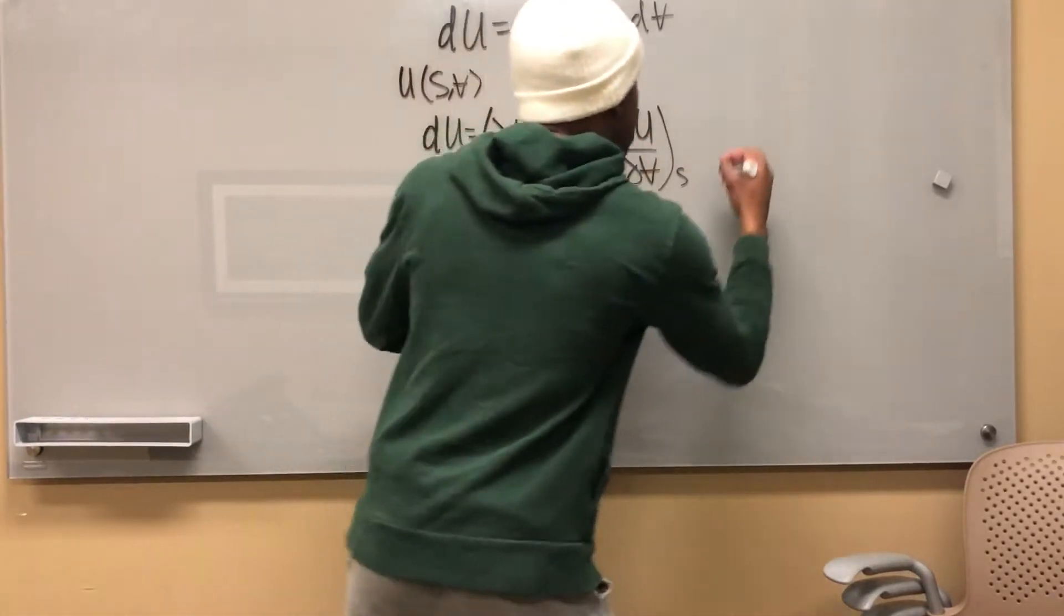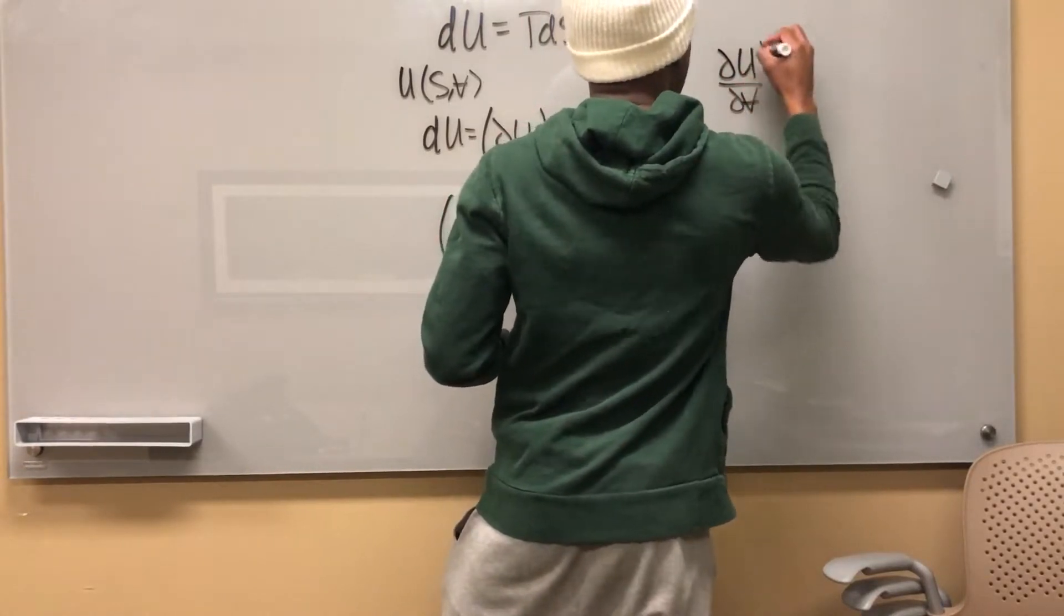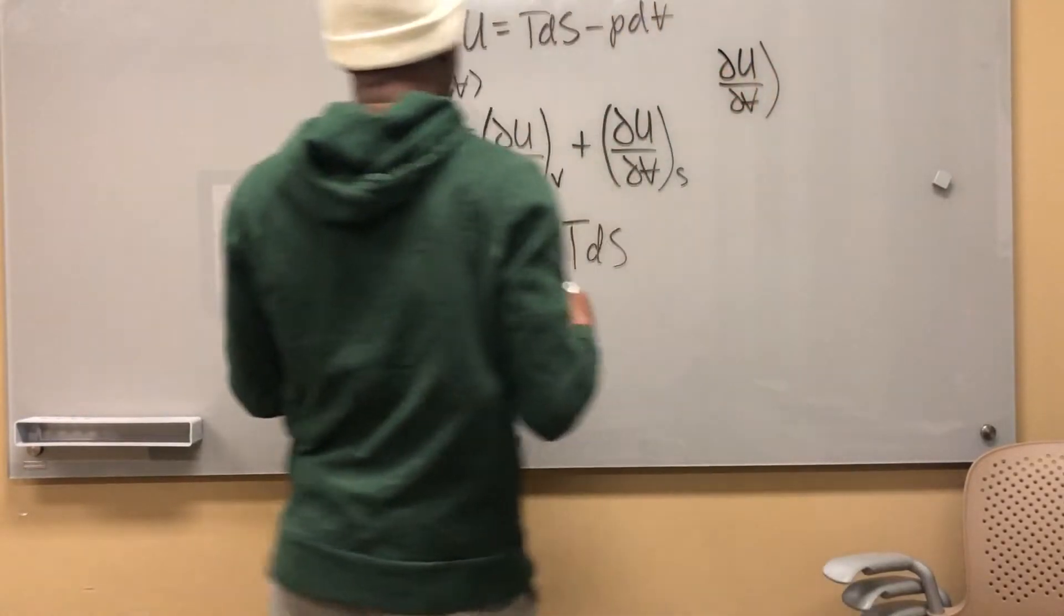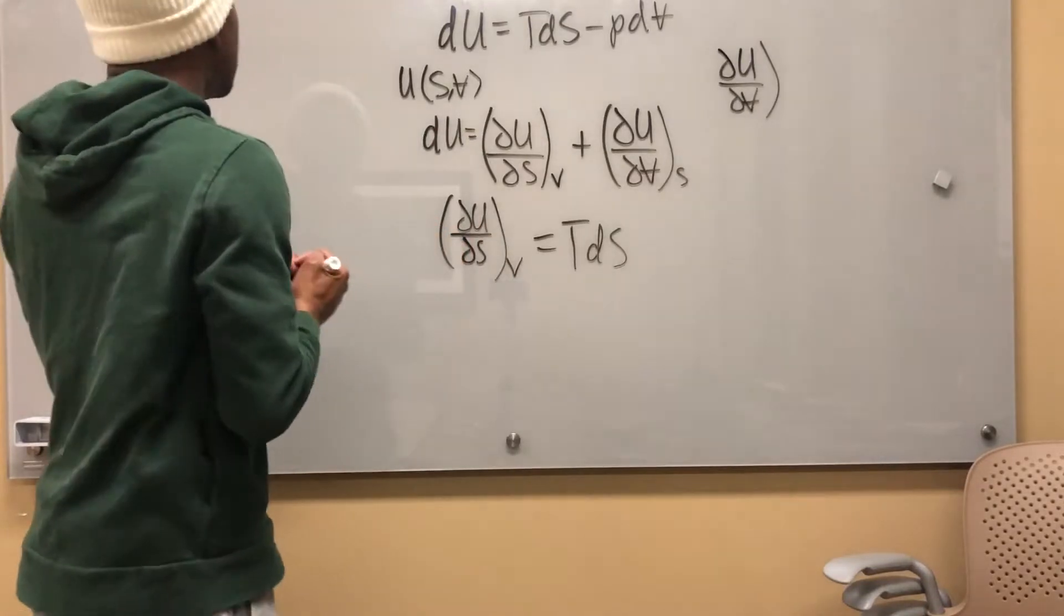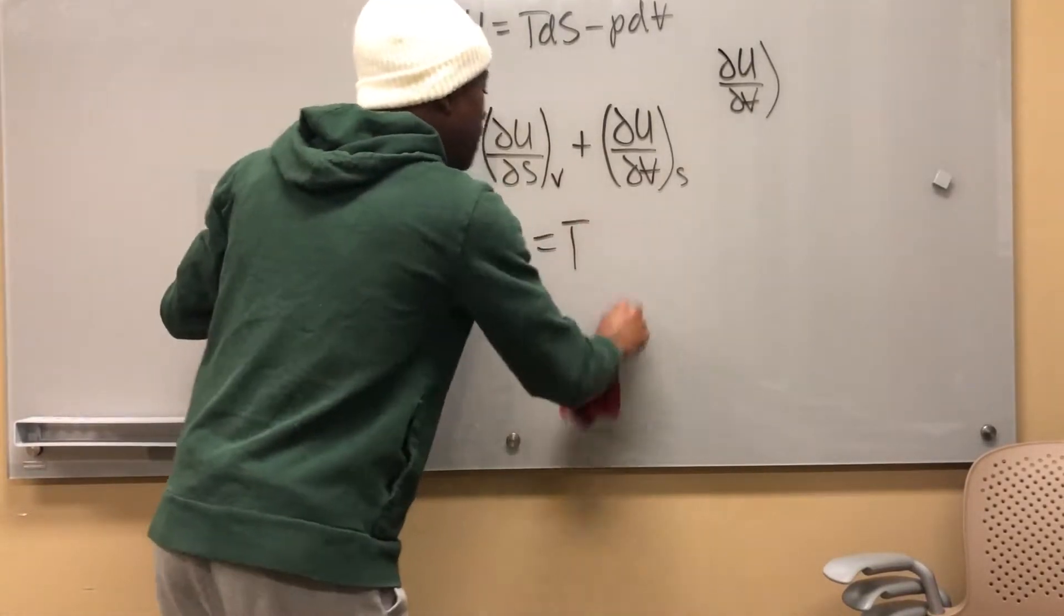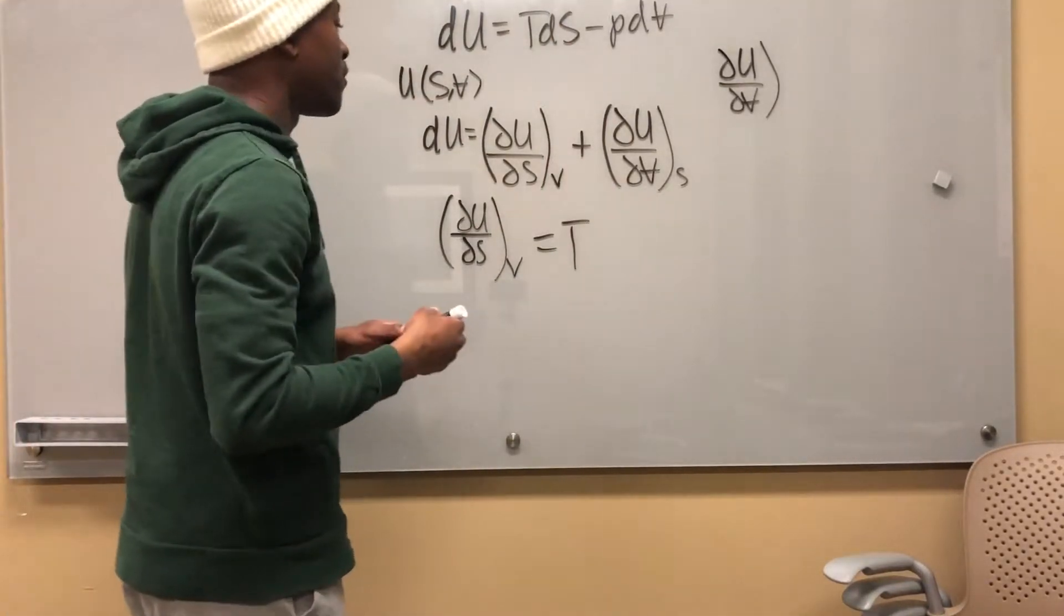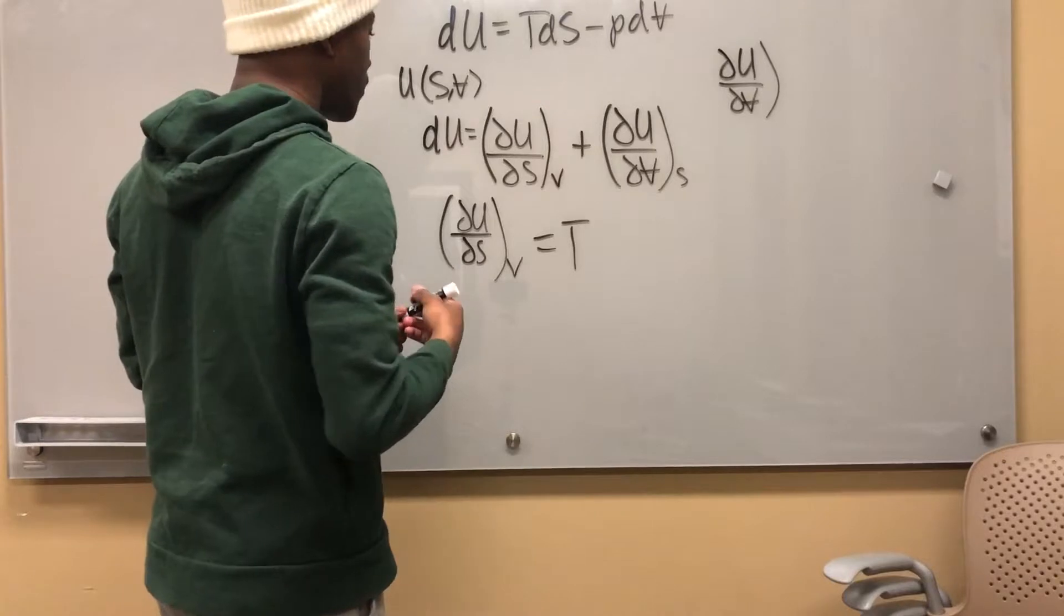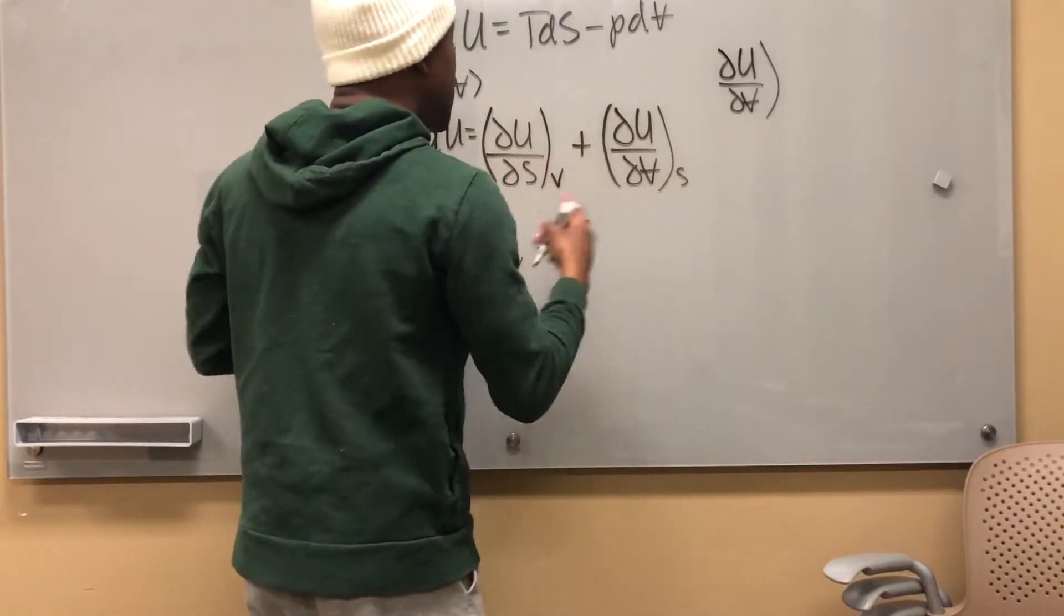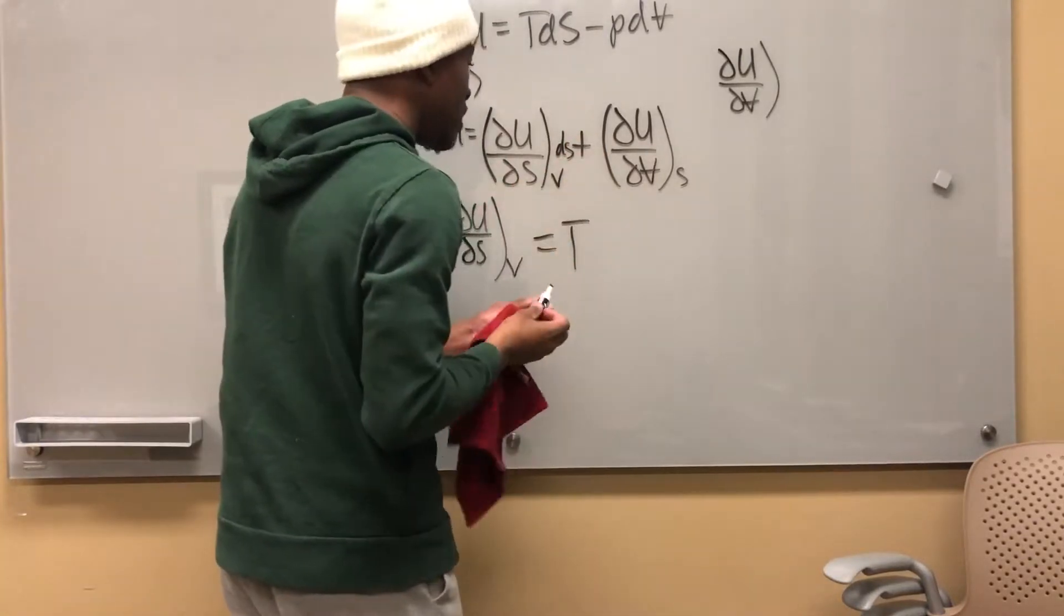Likewise this is equal to this, so del u del v at constant... I'm sorry, del u del s at constant v is simply equal to T, it's not equal to TdS. That's because I have to multiply this by ds.